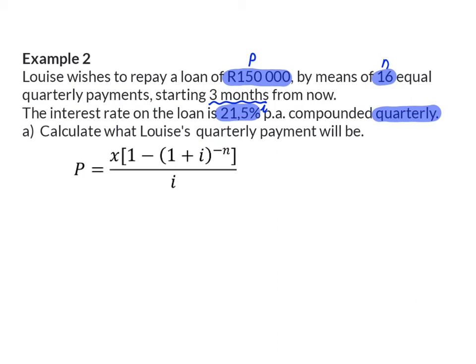For any normal loan, the big amount will be paid when you open your account, and then the repayments will start in one period's time. So here Louise received her R150,000 loan and in one period's time, which is one quarter or in three months time, she will make her first payment. And now we can substitute into our present value formula.